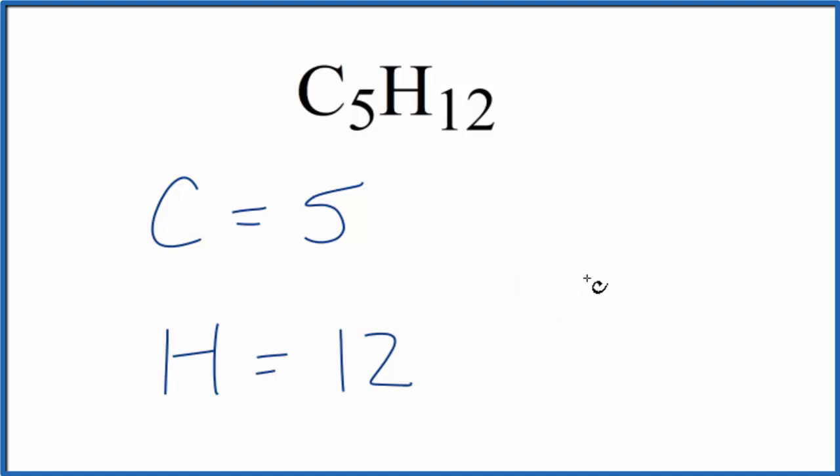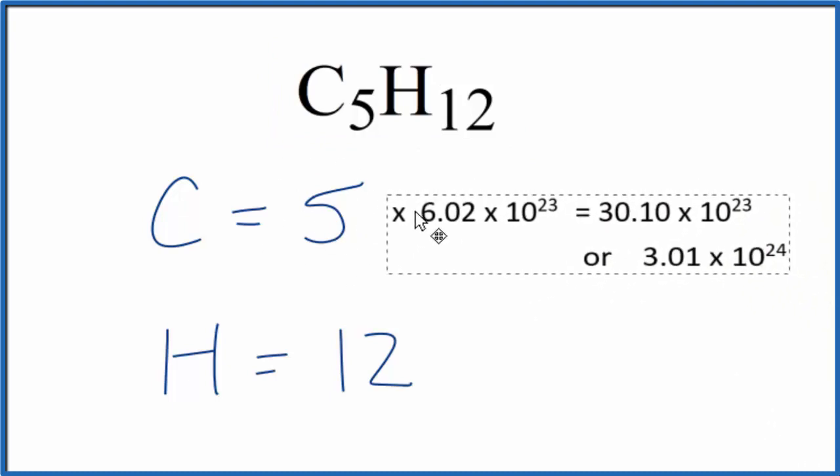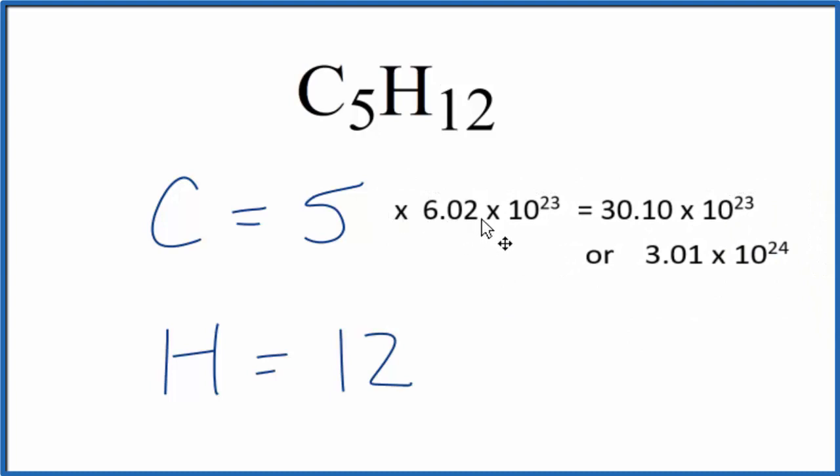Sometimes you're asked to figure out how many atoms of carbon you have in one mole of pentane. To do that, we multiply the number of carbon atoms by Avogadro's number. So when we do that, 5 times 6.02 times 10 to the 23rd, that tells us how many carbon atoms we have in one mole of pentane.